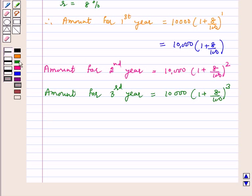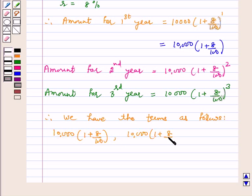So therefore, we have the terms as follows: 10,000(1 + 8/100), 10,000(1 + 8/100)^2 which was the amount for the second year, 10,000(1 + 8/100)^3 and so on.